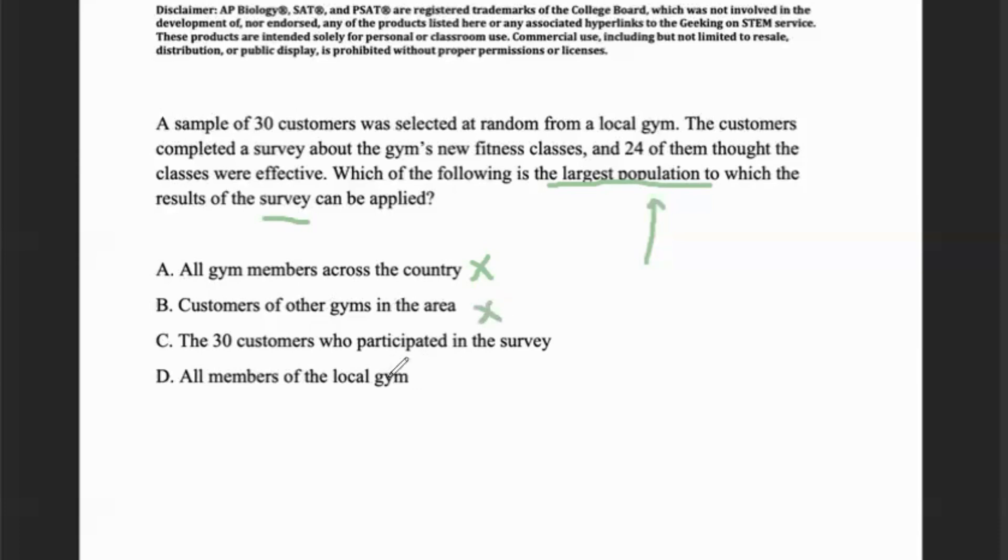Answer choice C says the 30 customers who participated in the survey. While the results do indicate that there are 30 customers that were selected at random to survey, the largest applicable group includes all members of that local gym. So that wouldn't be a great answer. So the best answer would be D.